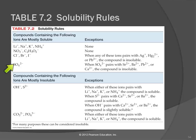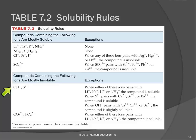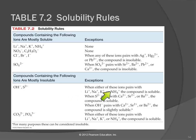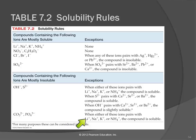Sulfate compounds are mostly soluble, except when the cation is strontium, barium, lead(2+), or copper(2+) — note that copper(1+) sulfate is soluble, but copper(2+) sulfate is not. Hydroxide and sulfide compounds are mostly insoluble, except with lithium, sodium, potassium, or ammonium; when hydroxide pairs with certain cations it's slightly soluble. Carbonate and phosphate compounds are generally insoluble, except with lithium, sodium, potassium, and ammonium.